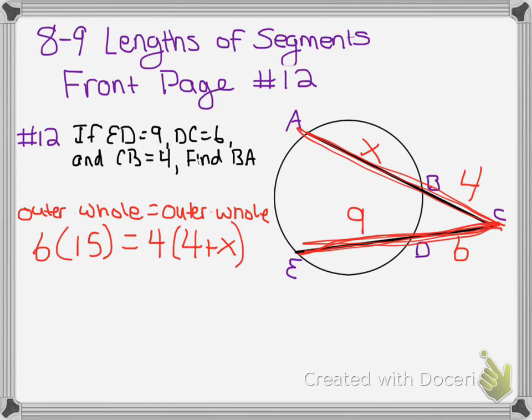Okay, notice that that's 4 plus X, not 4 times X. Then we solve it using algebra. So 90 equals, we're going to distribute, 4 times 4 is 16, 4 times X is 4X.